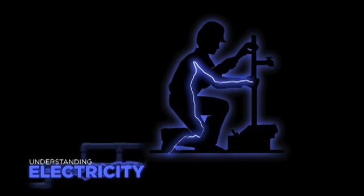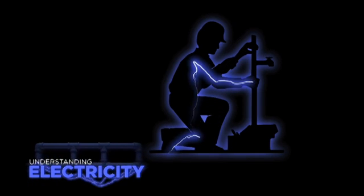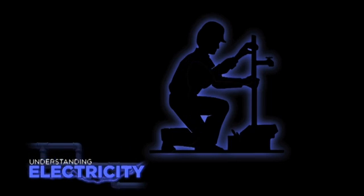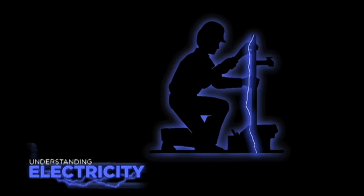The voltage and current of the circuit and internal body resistance will determine the severity of electrical contact. In some cases, electricity uses multiple paths to ground.